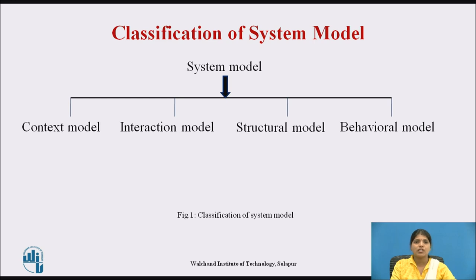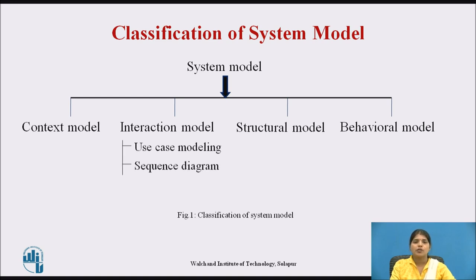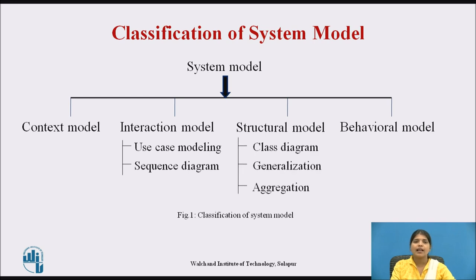The second type is interaction model. It may be a user or system model. It involves user inputs and outputs and interaction between the systems being developed. It has two types: first, use case modeling; and second, sequence diagram. The third type is structural model. Structural models of software display the components that make up the system and their relationships. It has three types: class diagram, generalization, and aggregation.